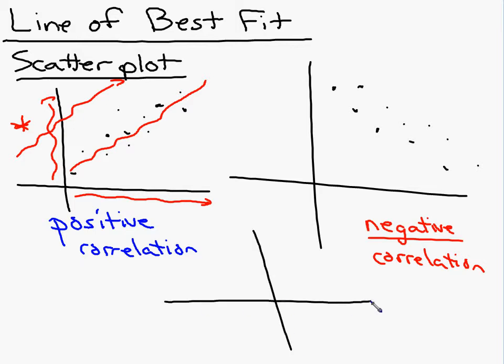Sometimes though, the points might be all over the place, like that one. If they're all over the place, we would say there's no correlation because the points are not trending in any one direction.